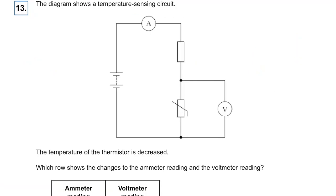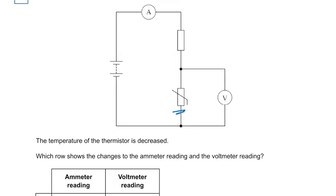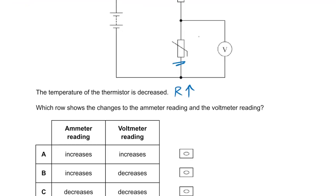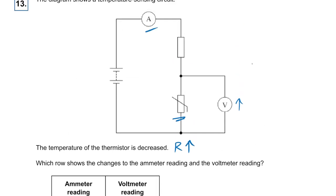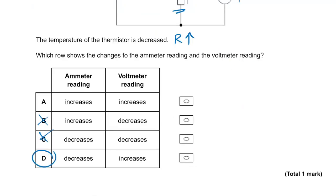Question thirteen: a temperature sensing circuit with a thermistor. When the temperature of the thermistor decreases, its resistance increases — the opposite of a normal wire. So its share of the voltage also increases, ruling out B and C. Since total resistance increases, total current goes down, so the ammeter reading decreases. The answer is D.